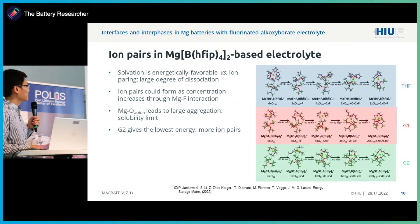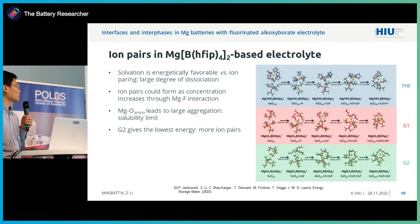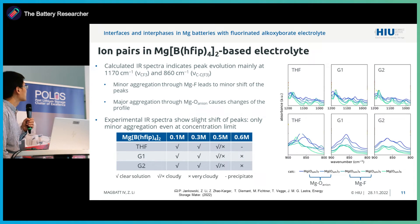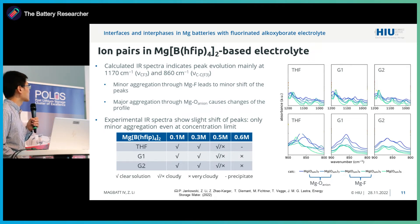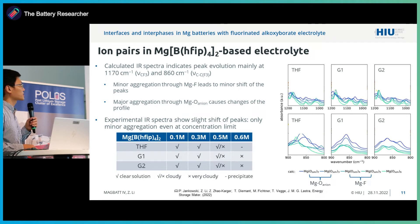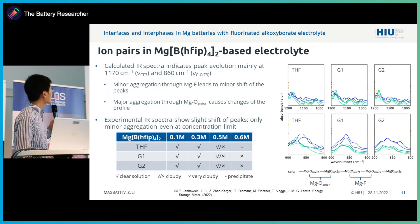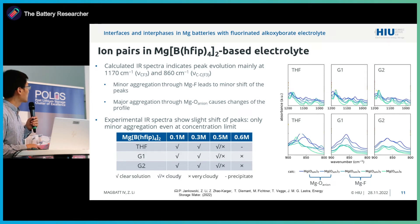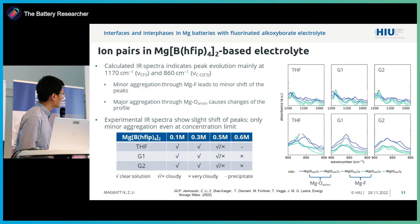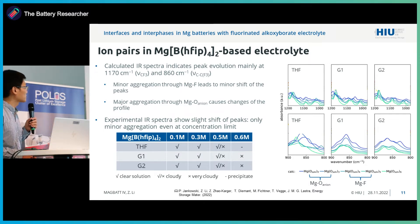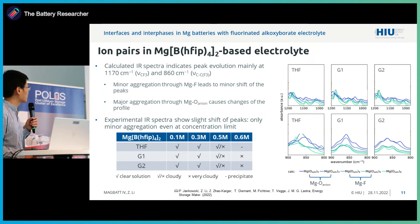We also compared with different glyme-based solvents. Especially from the first substitution step, G2 gives the lowest energy, so we could expect more ion pairs in a G2-based electrolyte. We then considered different coordination environments and computed theoretical IR spectra, comparing them with our experimental spectra. Focusing on the C-F vibrations, the green lines indicate minor aggregation through magnesium-fluoride interaction with only a very small shift, but once we have major aggregation through magnesium-oxygen interaction, the profile changes completely.